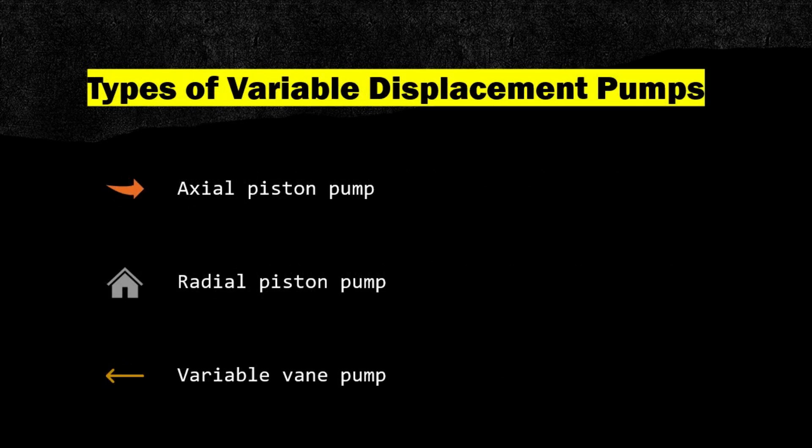Types of variable displacement pumps include axial piston pumps, radial piston pumps, and variable vane pumps.